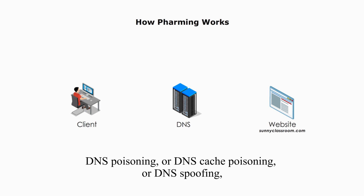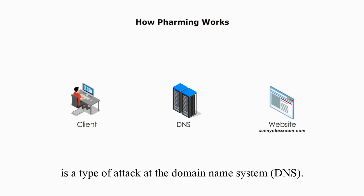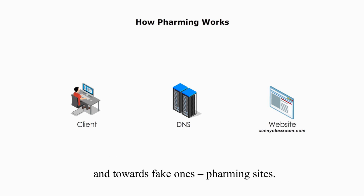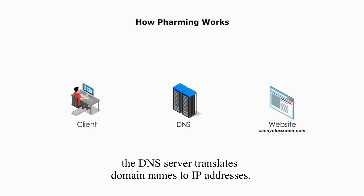DNS poisoning, also called DNS cache poisoning or DNS spoofing, is a type of attack on the domain name system. The goal is to divert users away from legitimate sites and towards fake ones. As we know, the DNS server translates domain names to IP addresses.